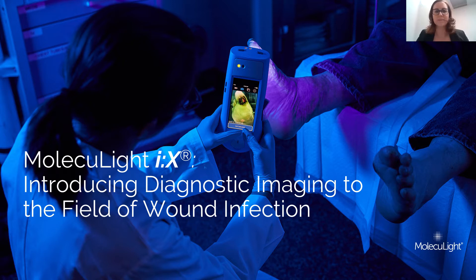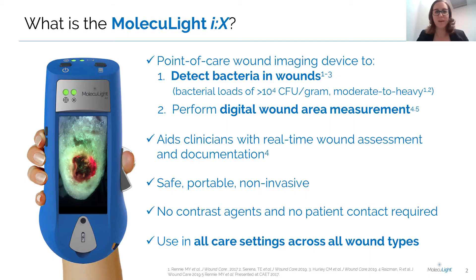The Moleculite IX is introducing diagnostic imaging to the field of wound infection. The Moleculite IX is a point-of-care fluorescence imaging device that detects bacteria in wounds at loads greater than 10 to the 4 CFU per gram, which is roughly moderate to heavy growth, and performs highly accurate digital wound area measurement.